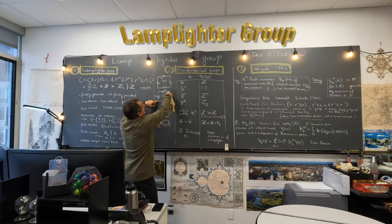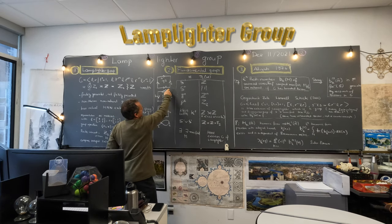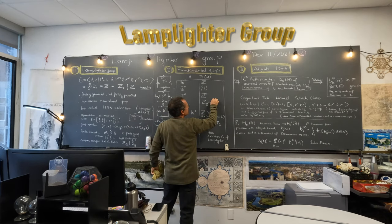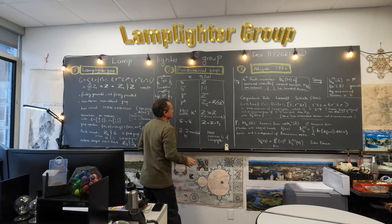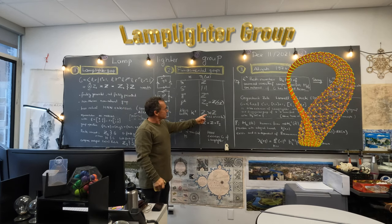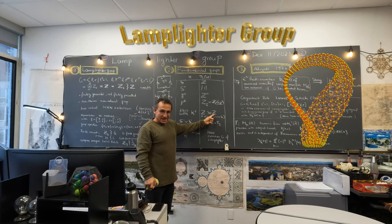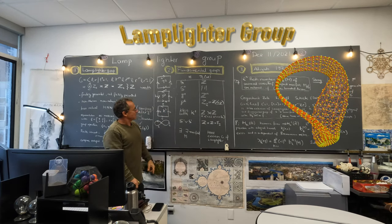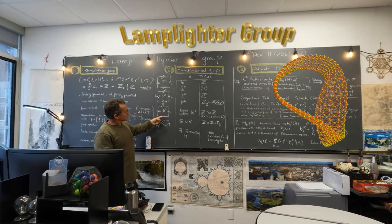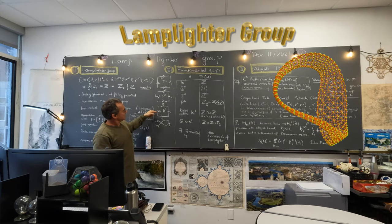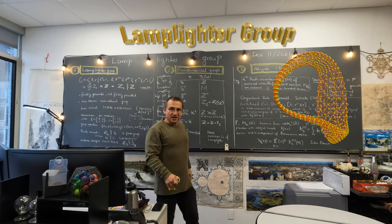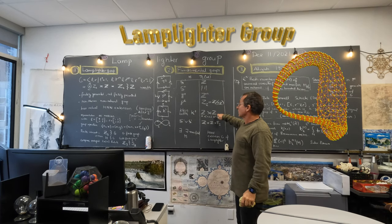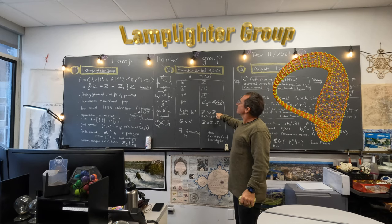The Klein bottle model is very interesting because here the semi-direct product appears. The base is the integers and the fiber is also the integers. You can understand this by its presentation: with generators A and B, doing A, B, A gives the same thing as B. This is already a very interesting case of a non-abelian fundamental group.